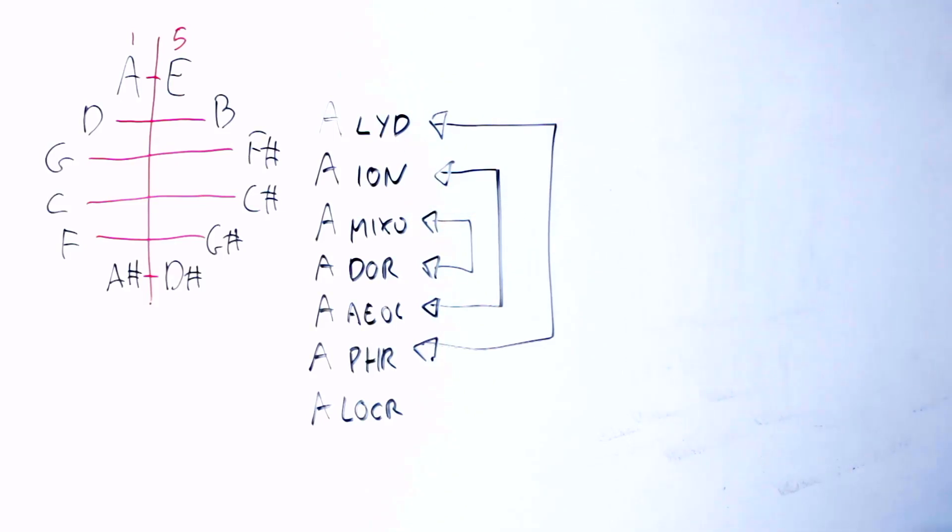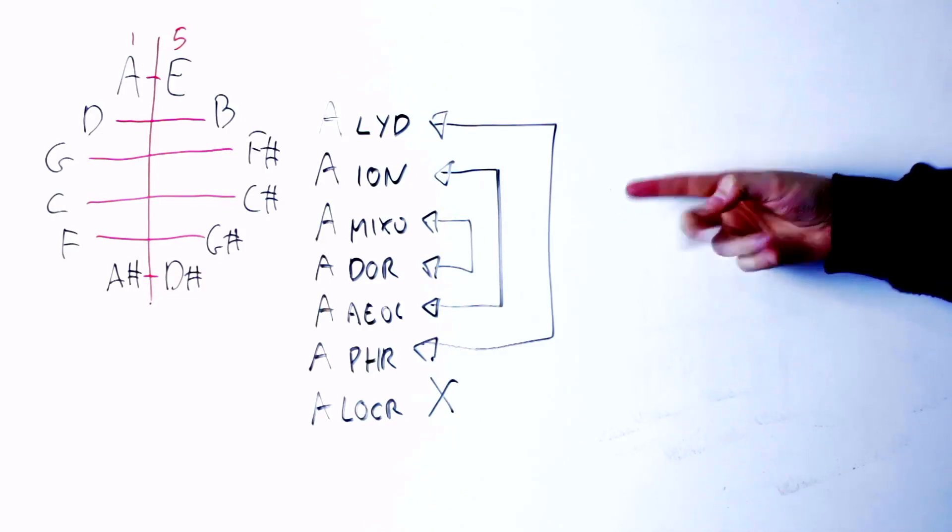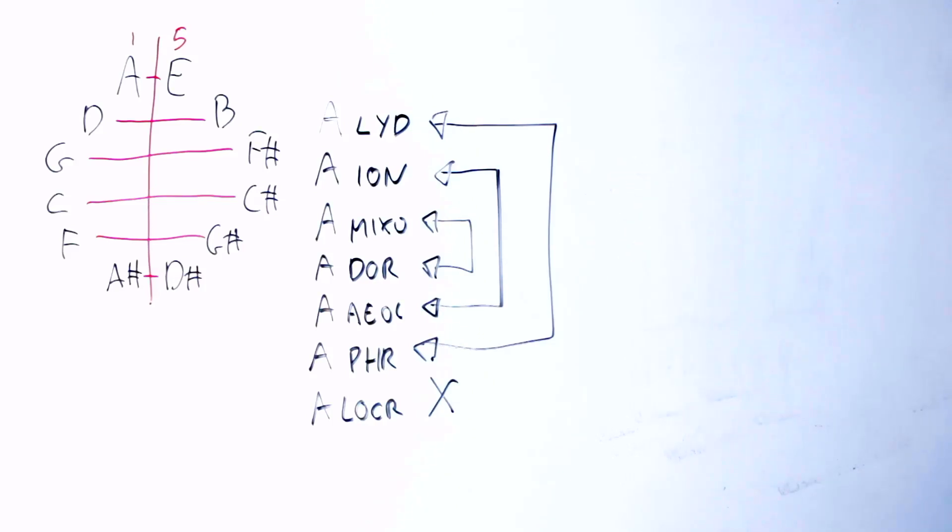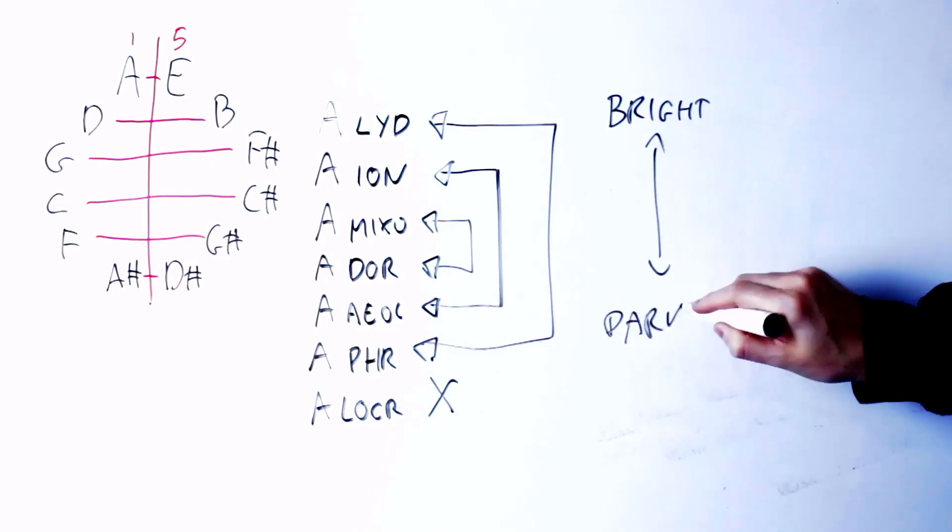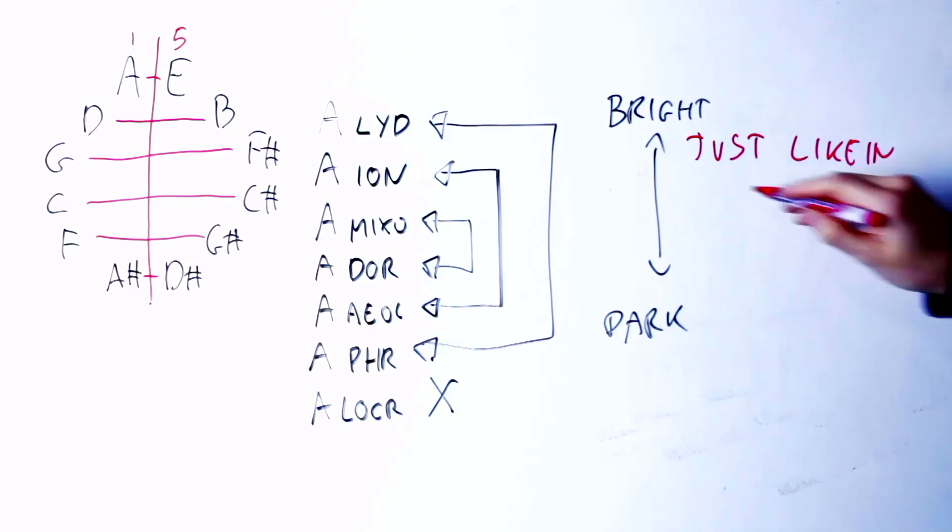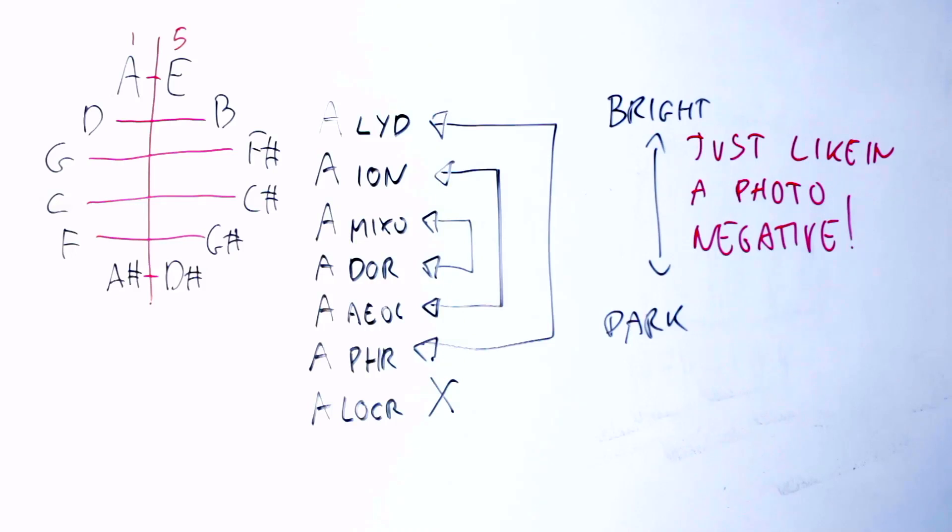So I'm going to ignore Locrian for the moment, and I focus on the other six modes, which I call the six usable modes. The six usable modes in the order of brightness get reversed. That is, literally, under negative harmony, the brighter modes become the darker modes, and the darker modes become the brightest modes.